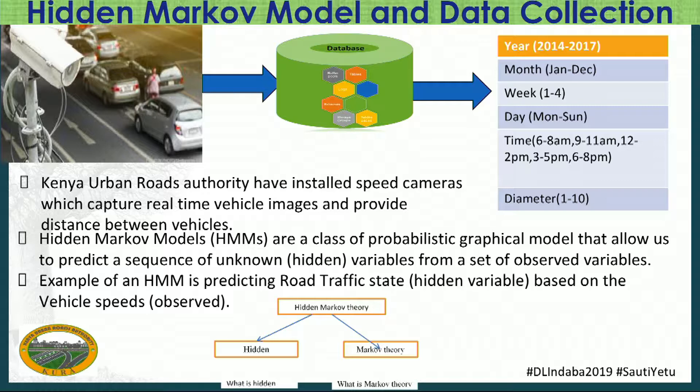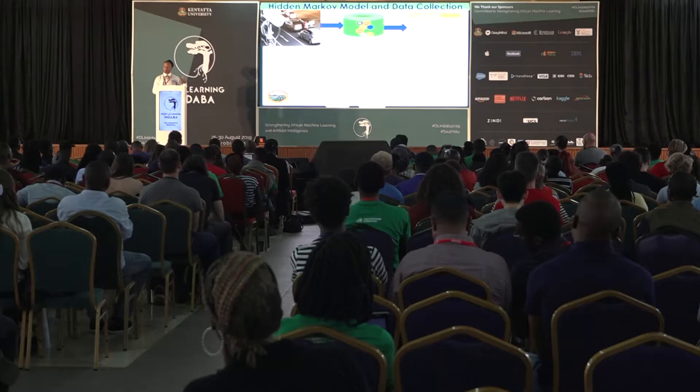We obtained our data from the Kenya Roads and Highways Authority. It is a very large dataset, but I decided to extract data from the year 2014 to 2017. The data was collected via speed cameras installed by the government on our roads. I noted a key field in that data called Diameter, which is the distance between vehicles. Since we can get the inter-vehicle distance and vehicle speed, we can do modeling and try to predict whether there will be traffic or not.